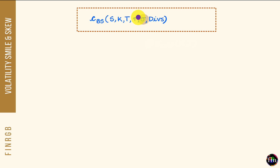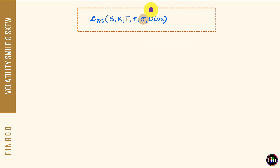It is only the implied volatility input which is not really observable. Because this input is not observable, it gives us the flexibility that just in case the model price does not match the market price for our chosen option, this input can be bumped up or down and set to a value such that the model price comes out to be equal to the market price.